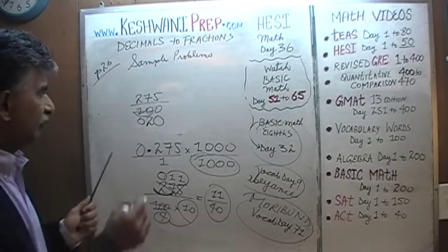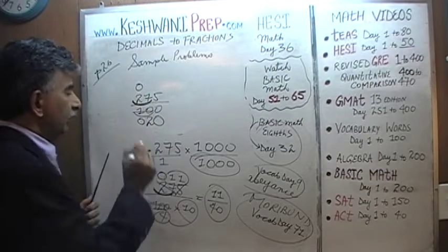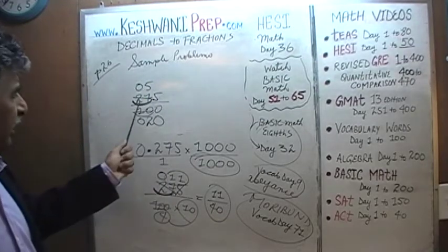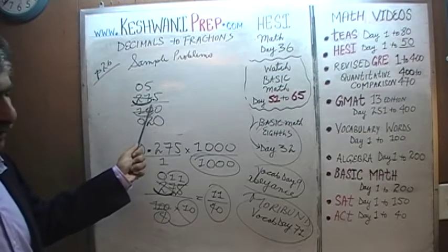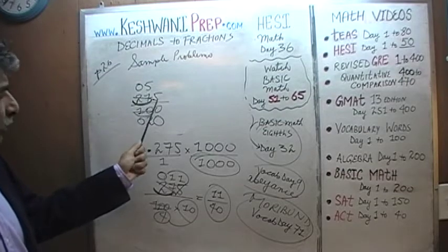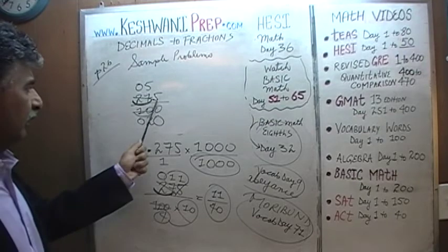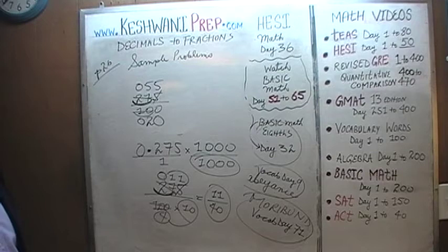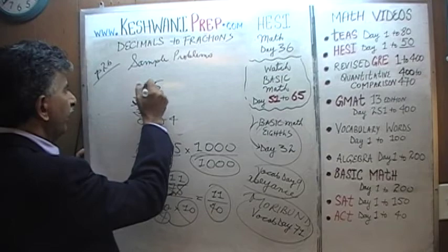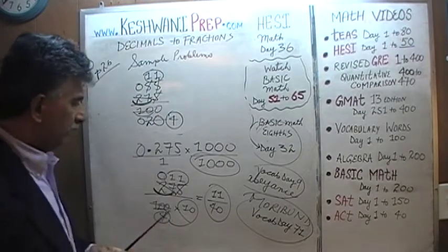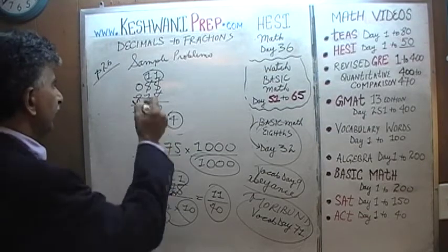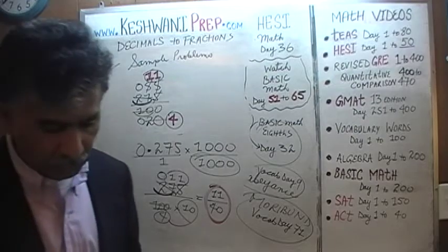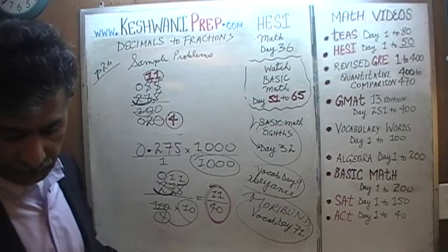Dividing the top 275 by 5: 2 has no 5s, so it joins the 7 to become 27 — which has five 5s. After taking 25 from 27, the remaining 2 joins the 5 to become 25, which also has five 5s. So 275 divided by 5 is 55. We now have 55 over 200. Both 55 and 200 are multiples of 5, so we divide again: 55 divided by 5 is 11, and 200 divided by 5 is 40. We end up with 11 over 40 — same answer as before. So 0.275 is simply 11/40.